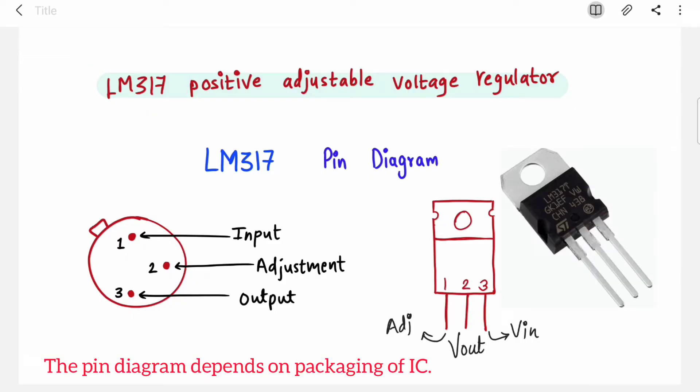Depending upon packaging and structure of your IC, the pin diagram will change. In one type, your first pin is input, second pin is adjustment, and third is output.